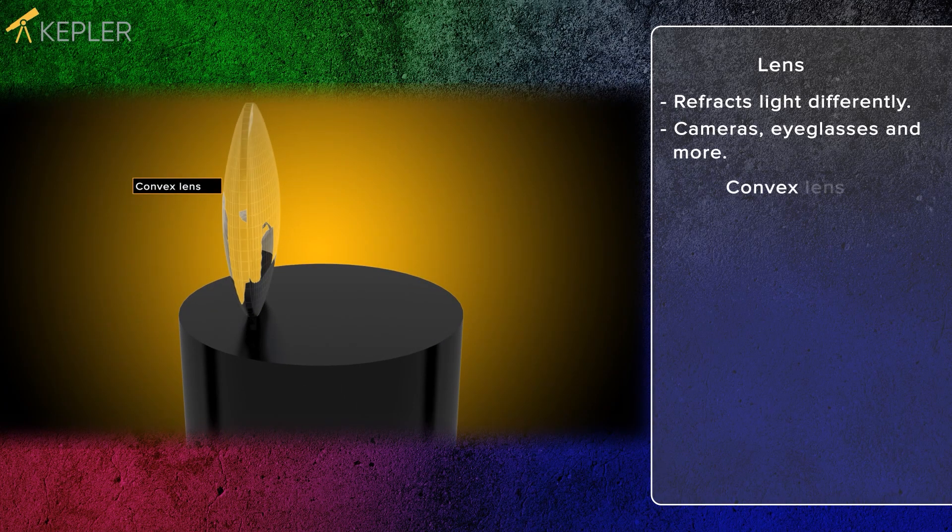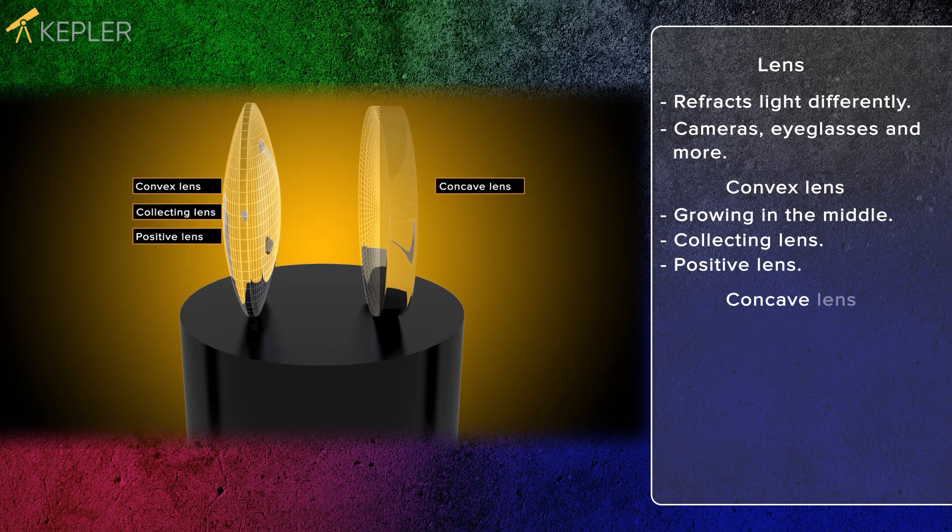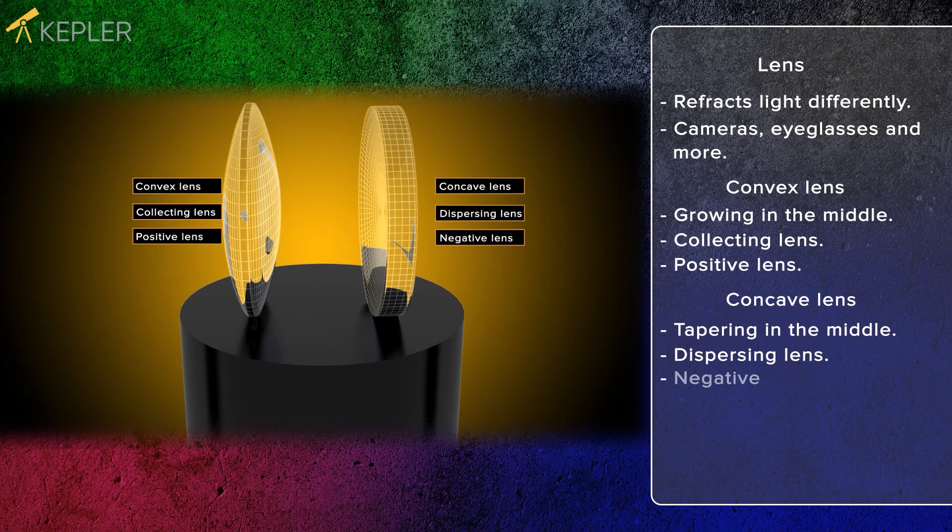Convex lens, growing in the middle, equals collecting lens, equals positive lens. Concave lens, tapering in the middle, equals dispersing lens, equals negative lens.